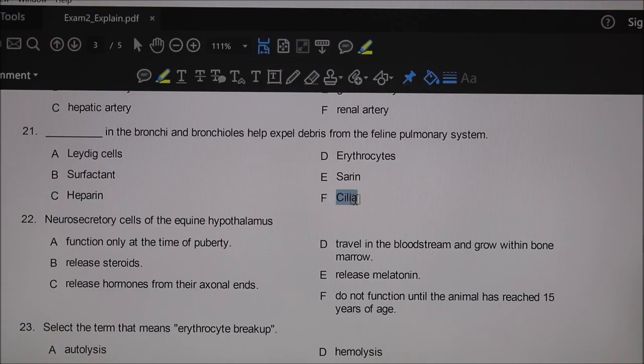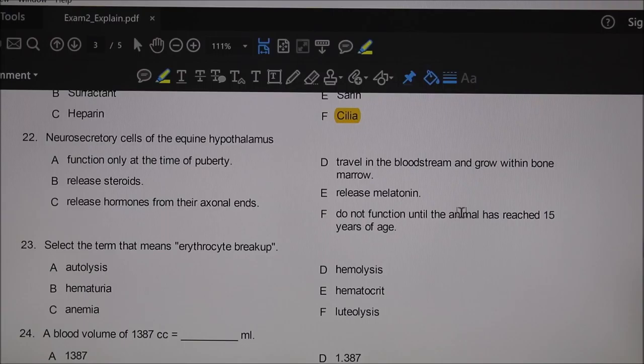Twenty-one: something in the bronchi and bronchioles helps expel debris from the feline pulmonary system. The answer is cilia—they're beating, and it's part of this thing we call the mucociliary escalator.